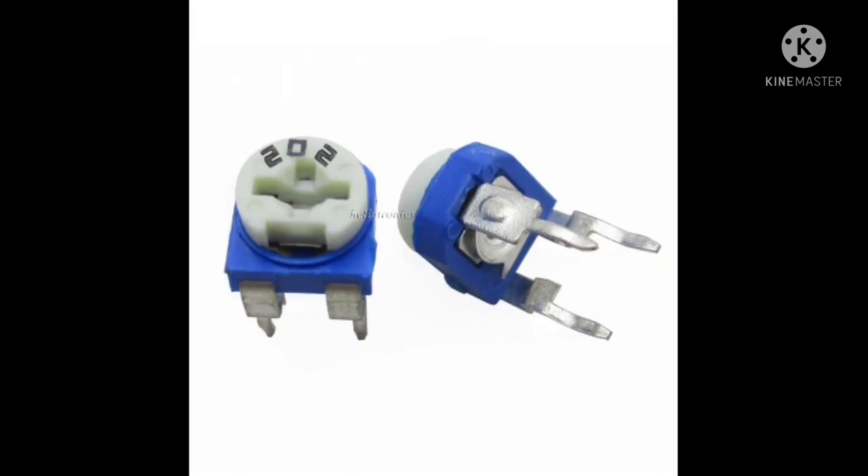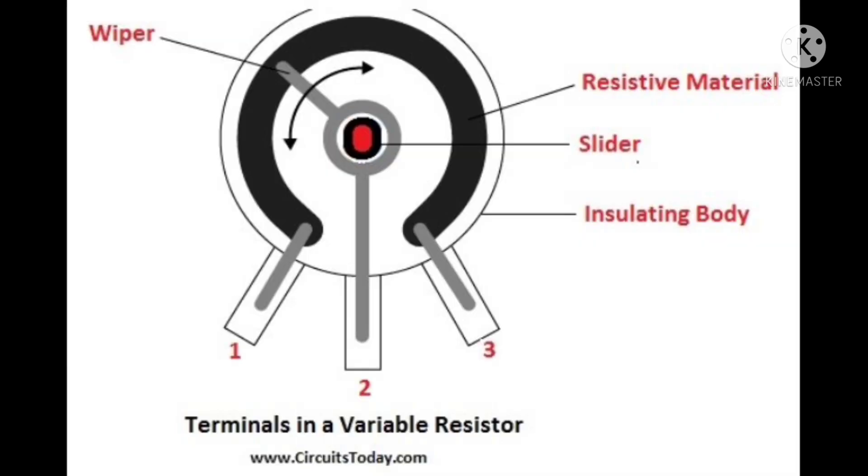When a variable resistor is used as a potential divider by using three terminals, it is called a potentiometer. When only two terminals are used, it functions as a variable resistance and is called a rheostat.